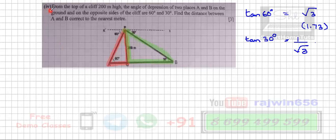The next question of trigonometry: from the top of a cliff 200 meters high, so this is the height PQ, this is 200 meters. The angle of depression of two places A and B on the ground and on the opposite sides of the cliff are 60 degrees and 30 degrees.